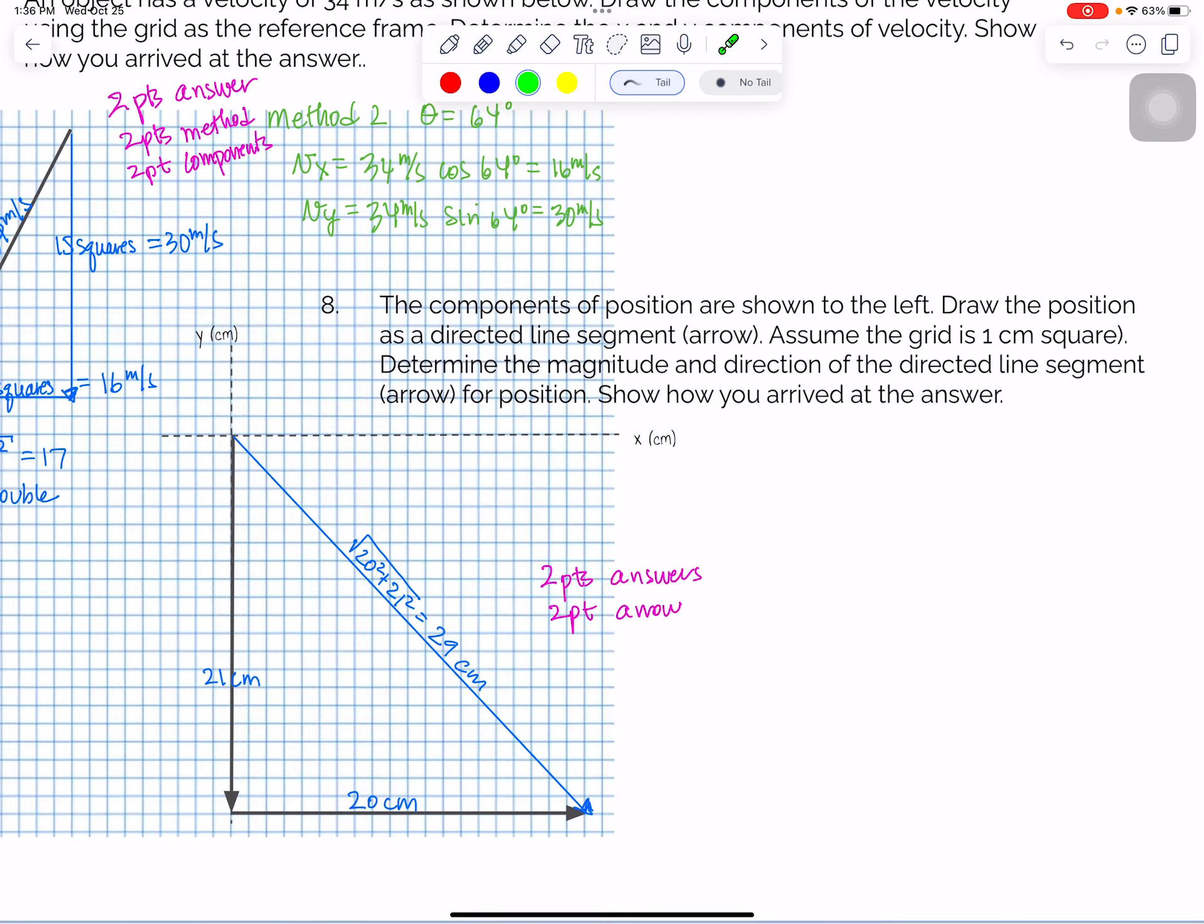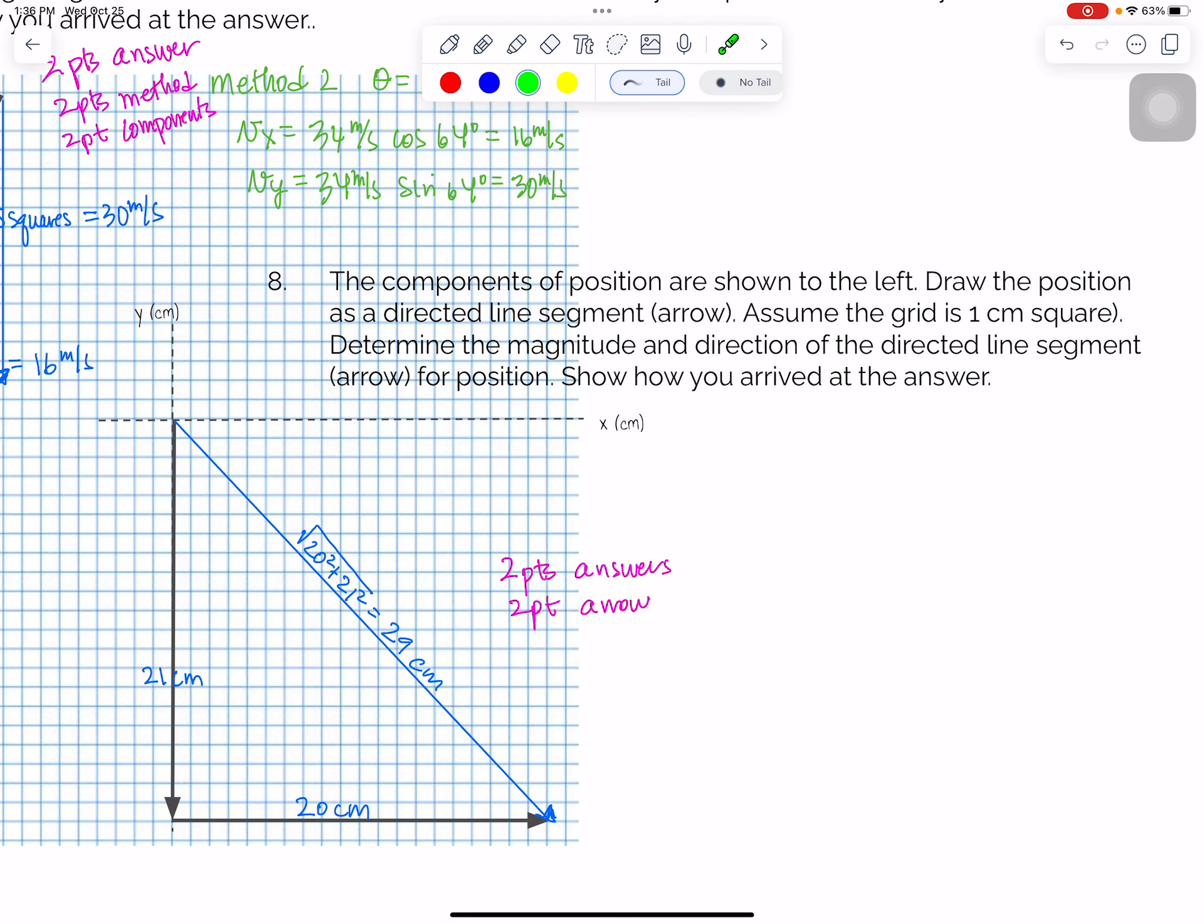The next one was components of position are shown to the left. Draw the position as a directed line segment. So I've got, this is my Y component. This is my X component. You needed to draw starting at the tail of the first to the tip of the second. And so you had to have both the line and the arrow. And then assuming the grid is one centimeter squared, determine the magnitude. That means the length or size and direction of the directed line segment. So I counted and I got 20 centimeters for the X, 21 centimeters for the Y. So I used Pythagorean theorem to get 29 centimeters.